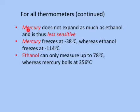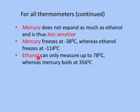Mercury does not expand as much as ethanol or alcohol, and is thus less sensitive. Mercury freezes at minus 38 degrees C, whereas alcohol or ethanol freezes at minus 140 degrees C. Ethanol can only measure up to 78 degrees C before it starts to boil, whereas mercury boils at 356 degrees C.